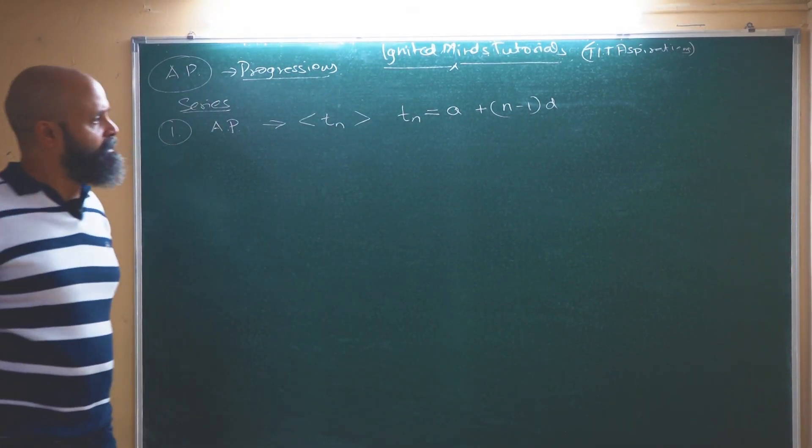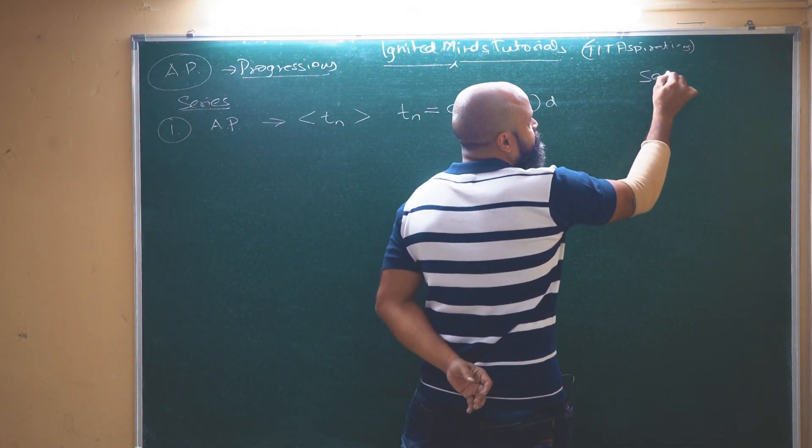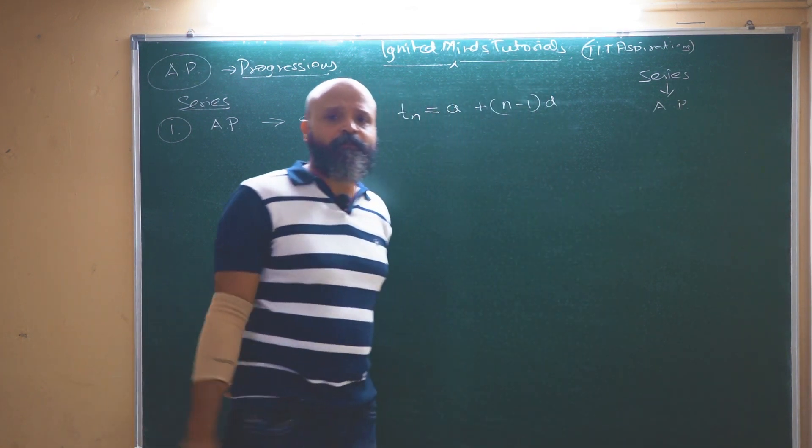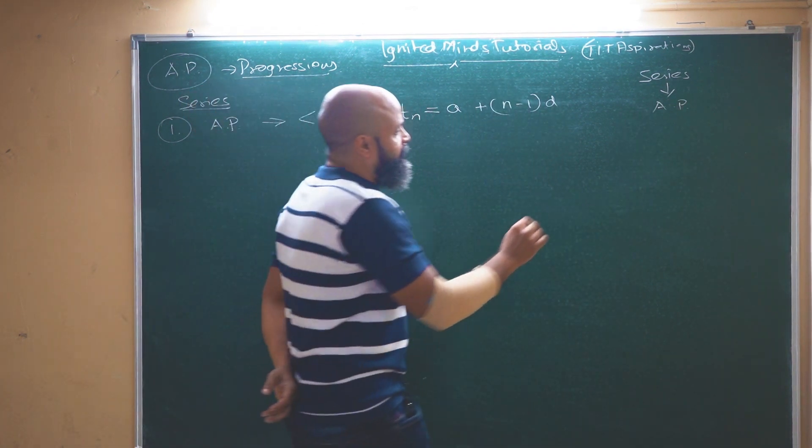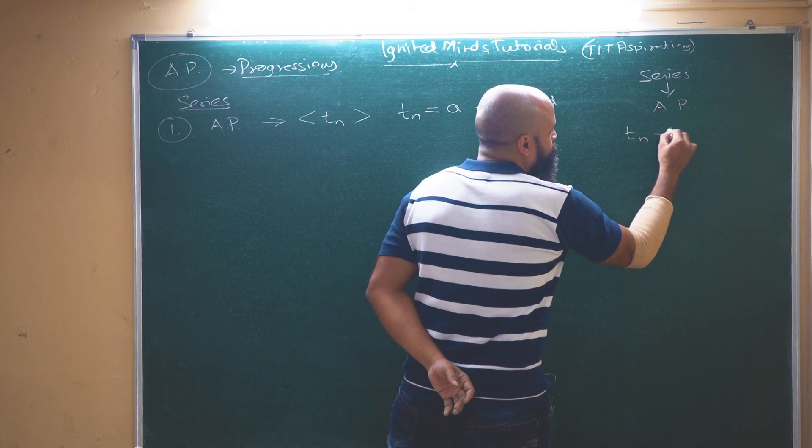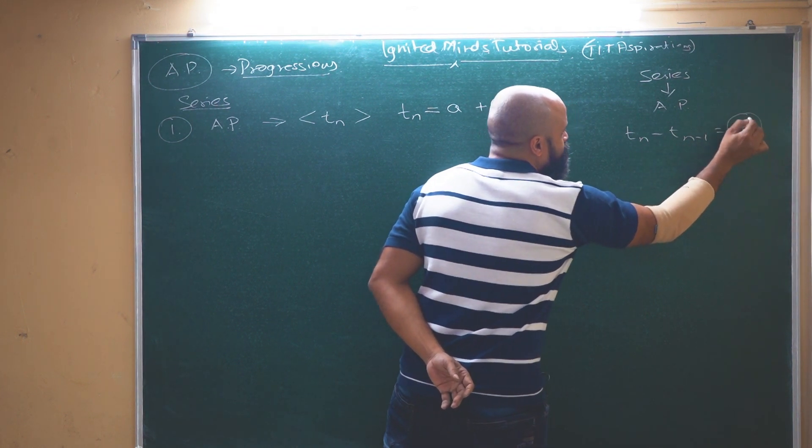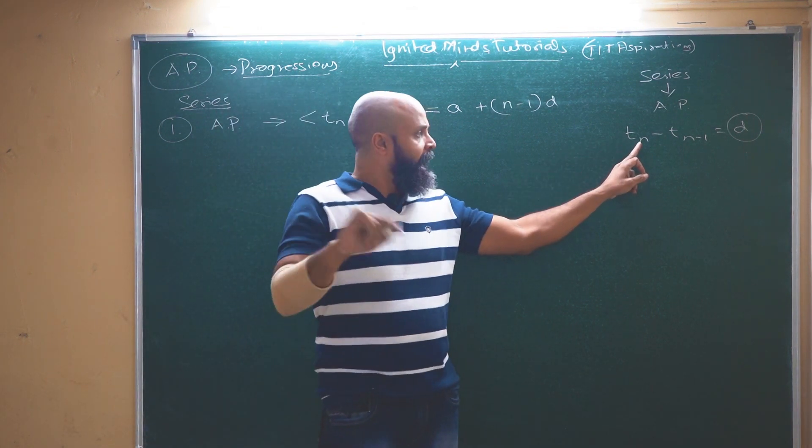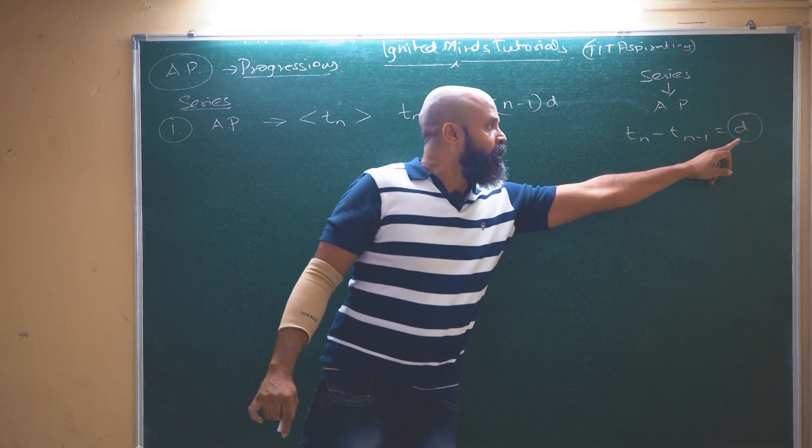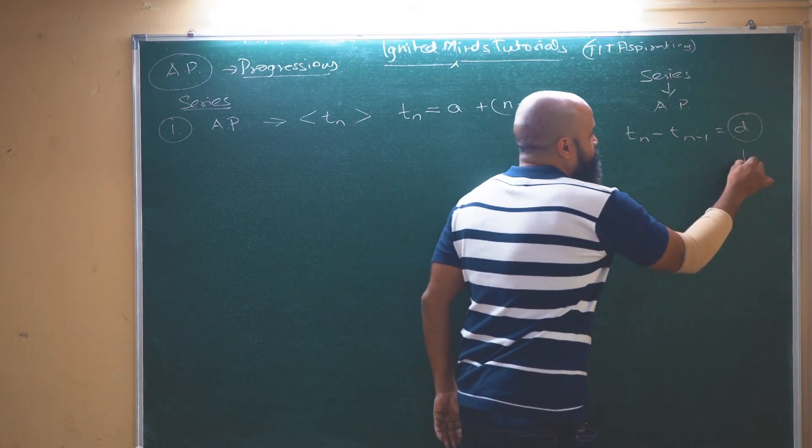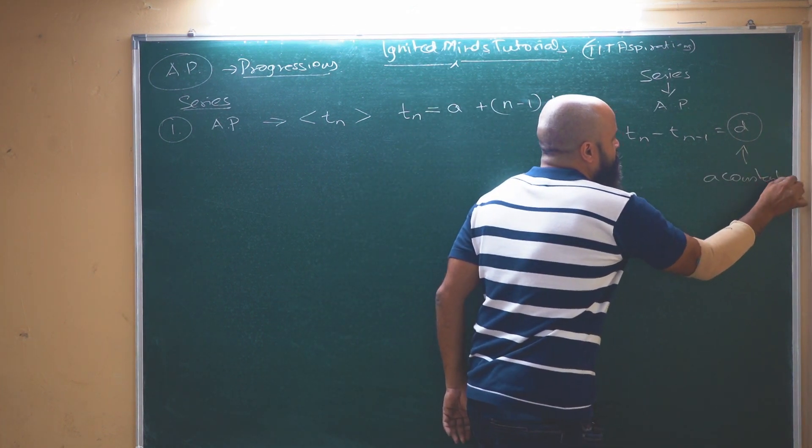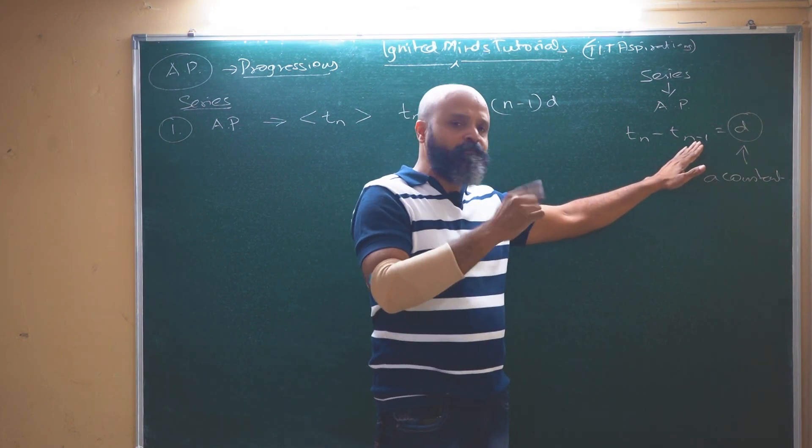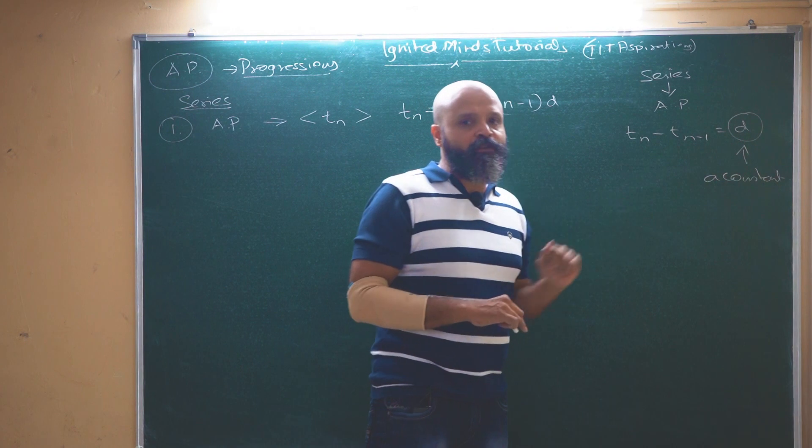So how do we say that a particular series is in arithmetic progression? A series is in arithmetic progression when we have a difference d which is going to be a common difference. So the difference between the nth term and the term preceding it, that is n minus 1th term, will always be a constant.